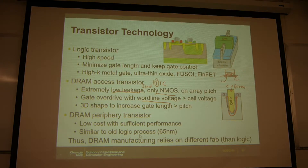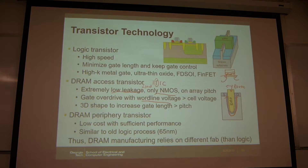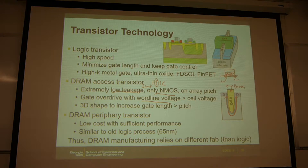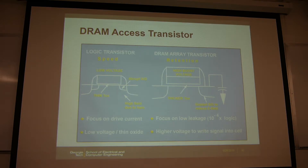If you look at the RCAT as a Fin, the recess gate and FinFETs have channels perpendicular to each other — we'll talk about how to combine them. For comparison: the logic transistor cares about speed, while the DRAM transistor cares about data retention, which requires small leakage. Typically, leakage in the DRAM access transistor is about four orders of magnitude smaller than in a logic transistor.